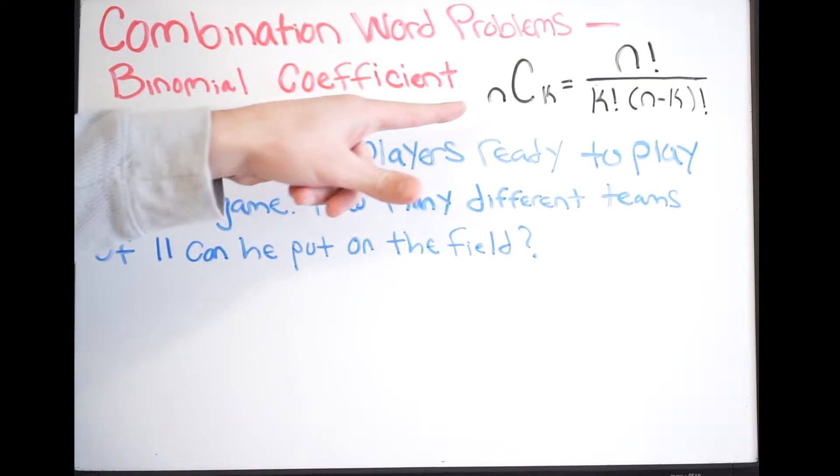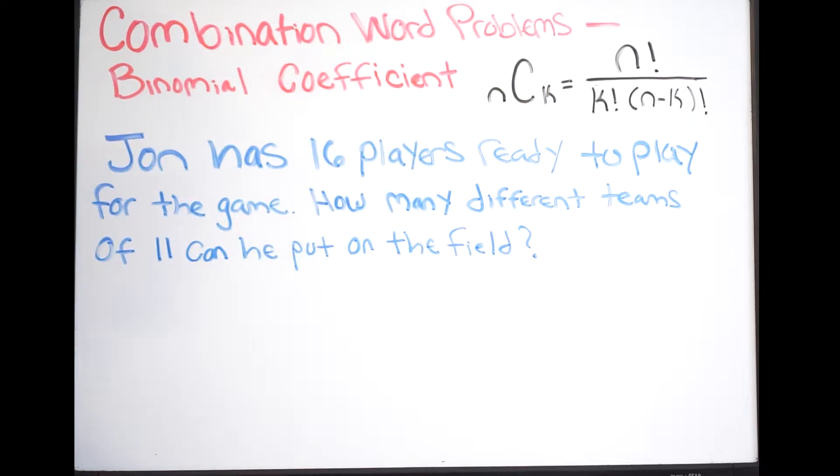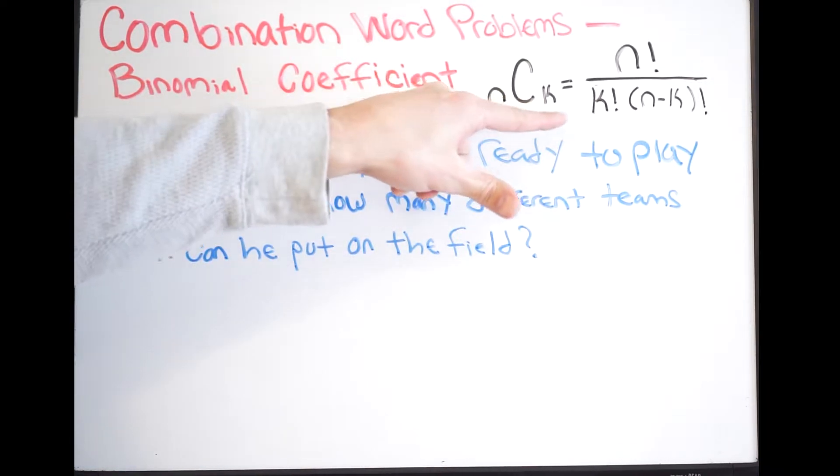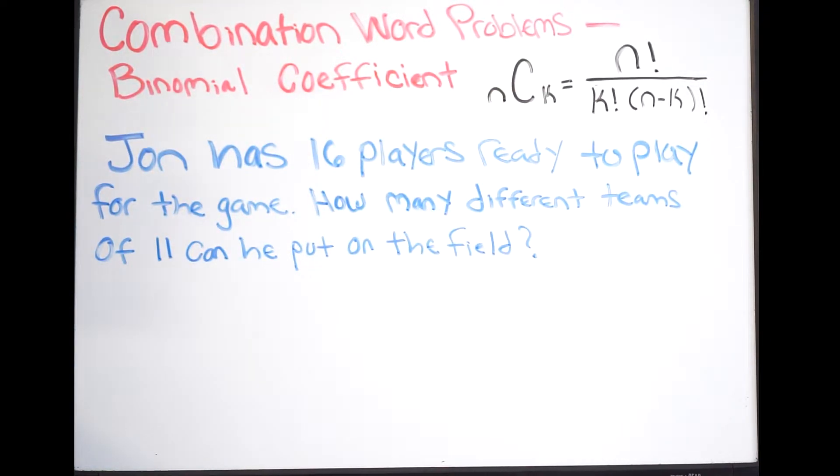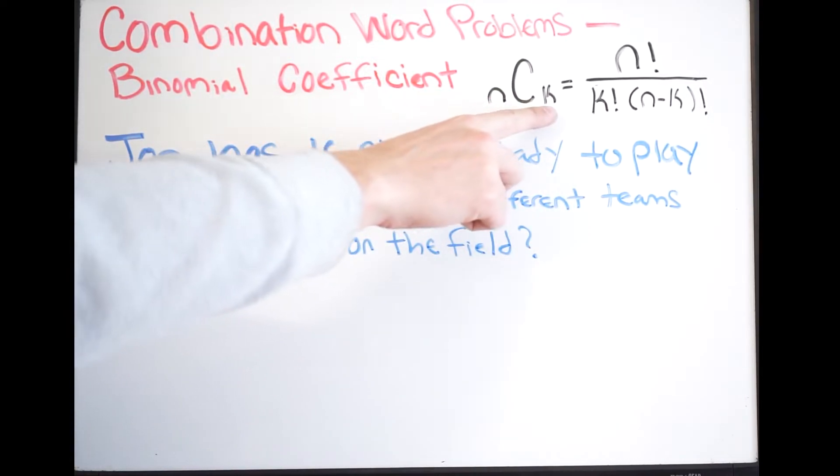This formula can simply be read as n choose k. Simply what this is saying is it's telling you the number of ways you could choose k items out of n.